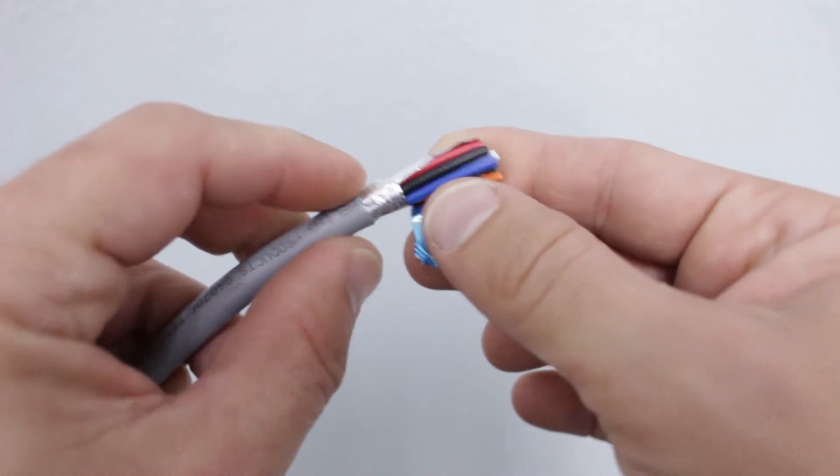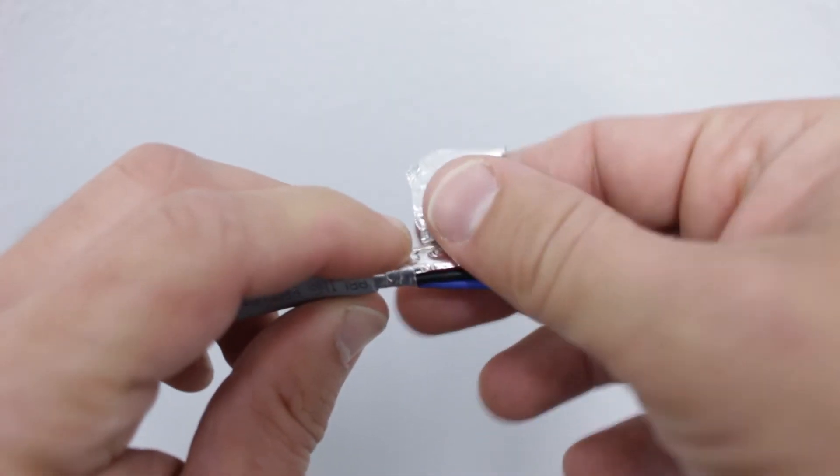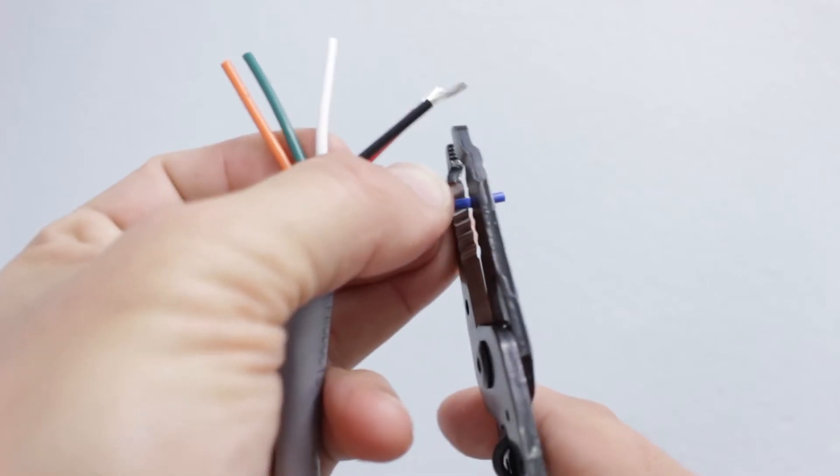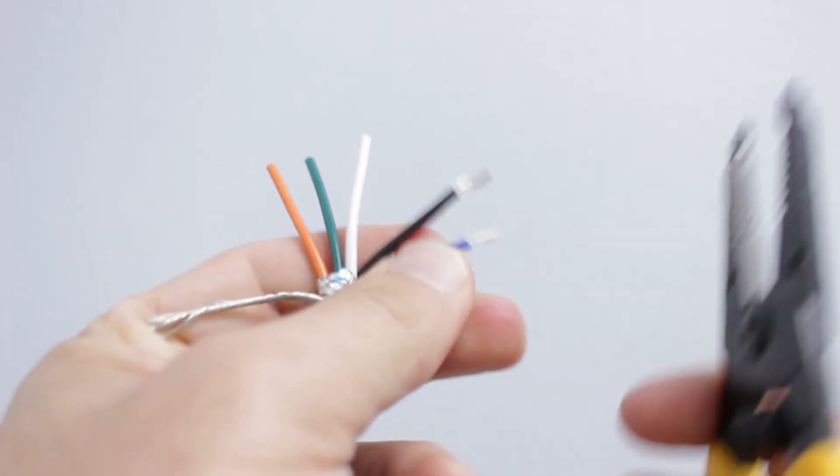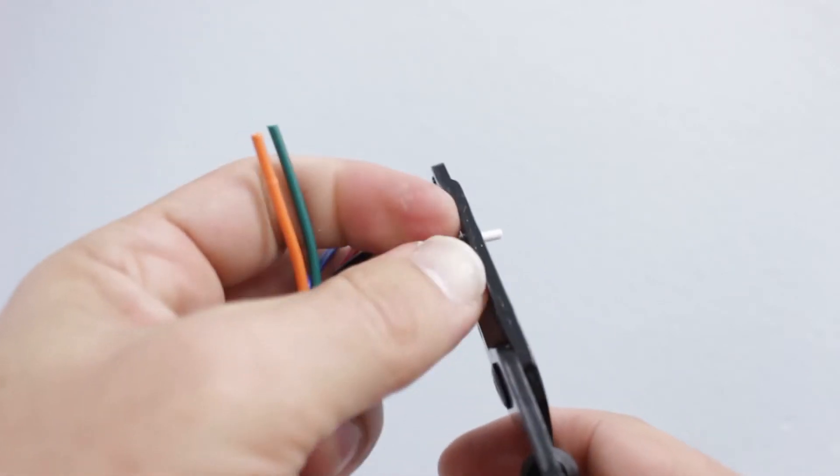Next, we'll carefully remove the foil shield. With the internal conductors exposed, it's time to remove their insulation. After determining the correct amount of insulation to strip, we'll use the compact wire stripper to cut into the insulation. Now, we'll pull the tool away from the wire to remove the cut piece and just need to repeat the process on the remaining wires.